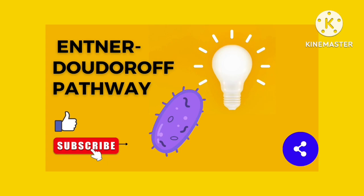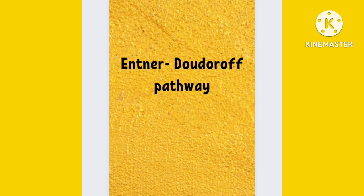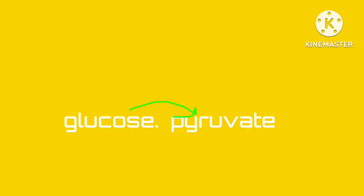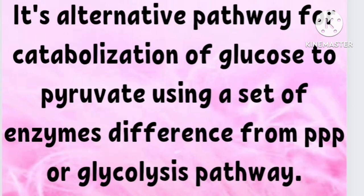The Entner-Doudoroff pathway, or ED pathway, is an alternative pathway that catabolizes glucose to pyruvate using a set of enzymes which are different from those of glycolysis or the pentose phosphate pathway.